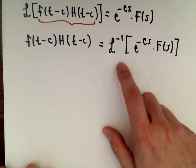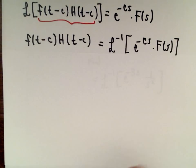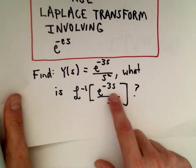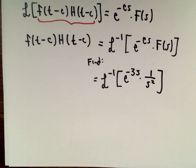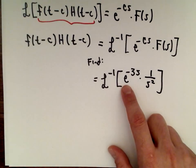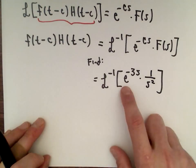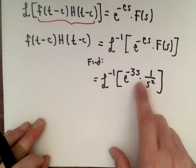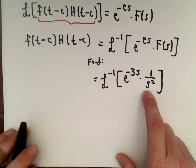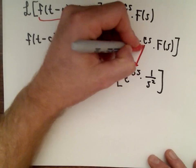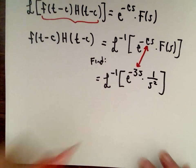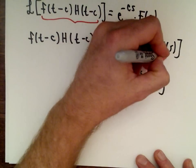We've got the form, so we had e to the negative 3s over s squared. I'm just breaking that up to make it crystal clear. We were trying to find the inverse Laplace transform of e to the negative 3s multiplied by 1 over s squared. Well, that means that our c value is going to be equal to 3. So c equals 3.